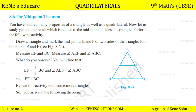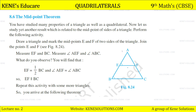You have studied many properties of a triangle as well as a quadrilateral. Now let us study yet another result which is related to the midpoint of the sides of a triangle. The triangle has sides AB and AC. Here E and F are the midpoints of AB and AC respectively.